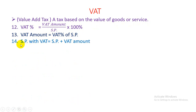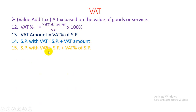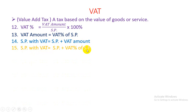SP with VAT = SP + VAT amount. SP with VAT = SP + VAT% of SP.